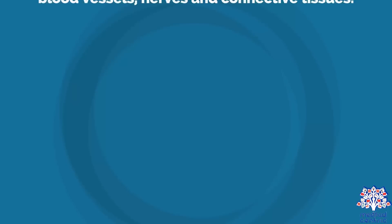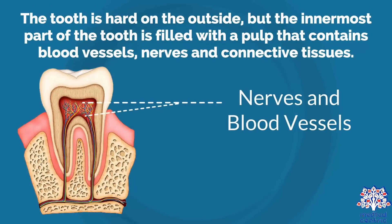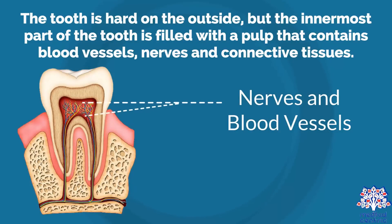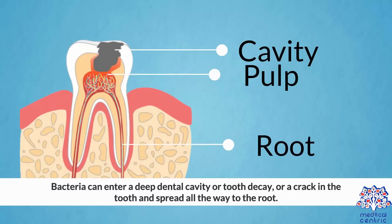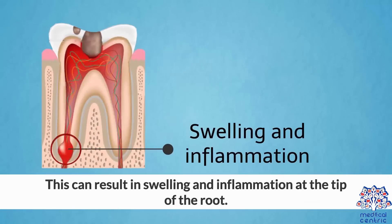Causes. The tooth is hard on the outside, but the innermost part of the tooth is filled with a pulp that contains blood vessels, nerves, and connective tissues. An abscessed tooth is formed when bacteria enters the teeth or gum. Bacteria can enter a deep dental cavity, tooth decay, or a crack in the tooth and spread all the way to the root. This can result in swelling and inflammation at the tip of the root.